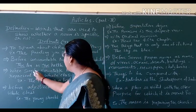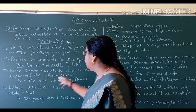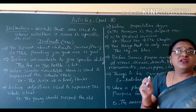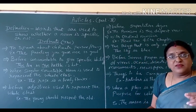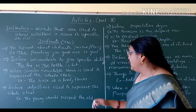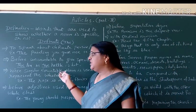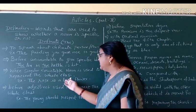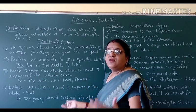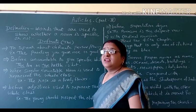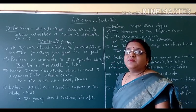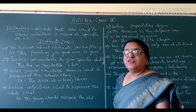The third rule: when a singular countable noun is used to represent the whole class. Singular means only one, countable means that we can count. The noun is used to represent the whole class. For example: 'The rose is a lovely flower.' Whosoever the rose is, whatever the rose is, it is a lovely flower.